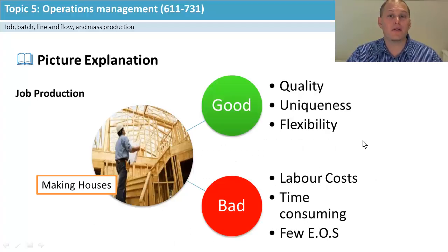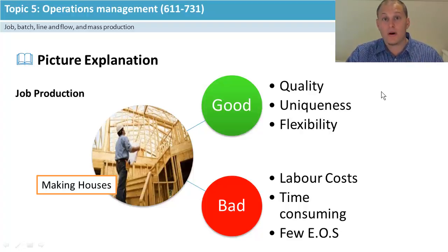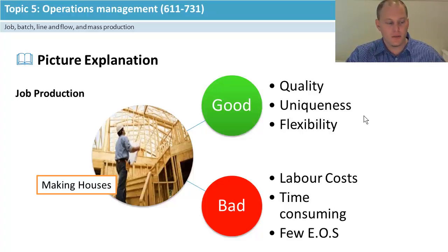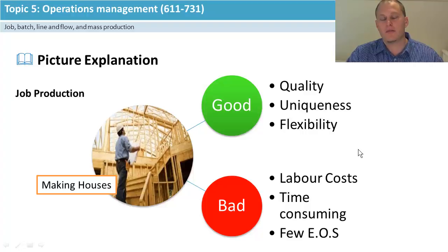Looking at job production — with making houses, for example — the main benefits are quality and uniqueness. You can make a lot of effort to get each stage done before moving to the next, which allows a lot of uniqueness. Because I'm building it up in stages to meet exactly what the customer wants — the concrete floor, the framing, the right roof — the product really meets a specific customer need, and quality and uniqueness tend to allow you to increase prices a lot.